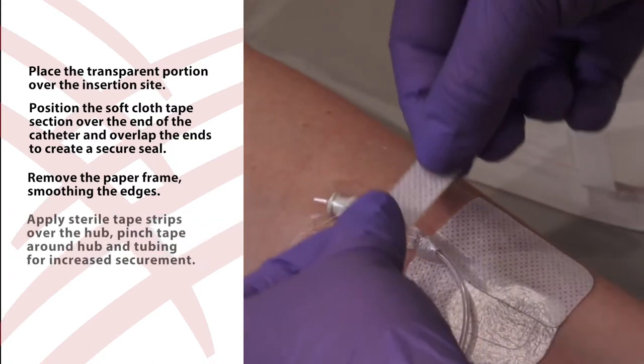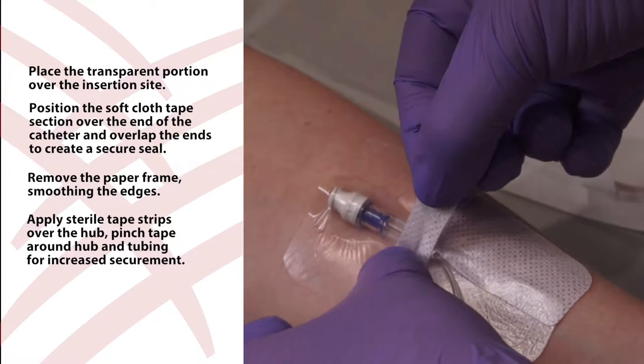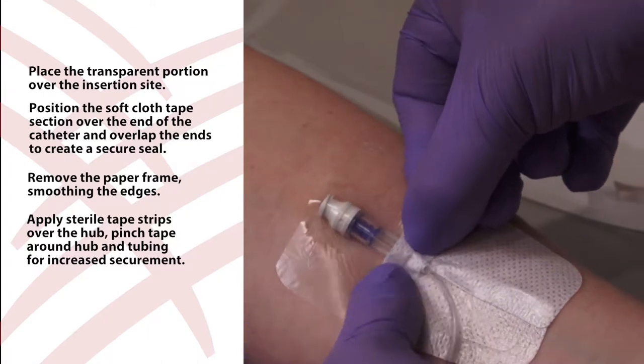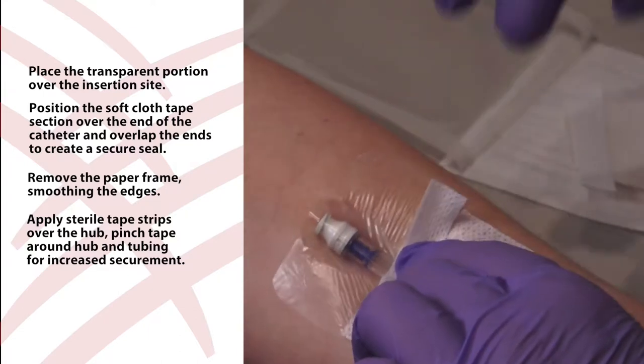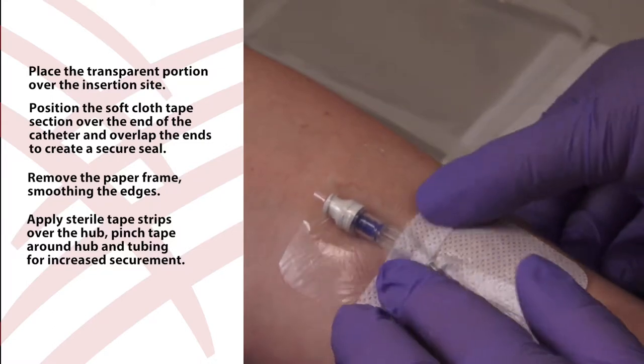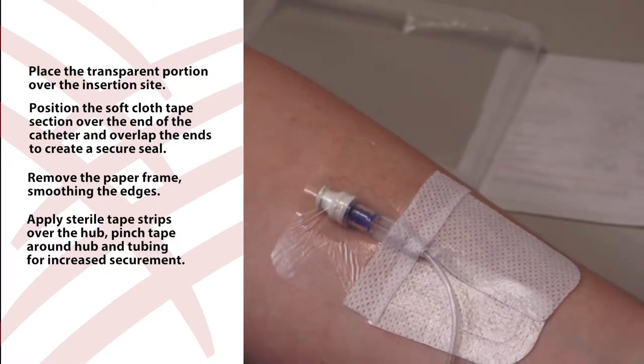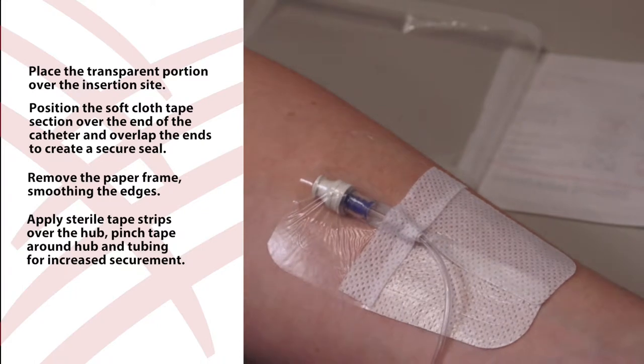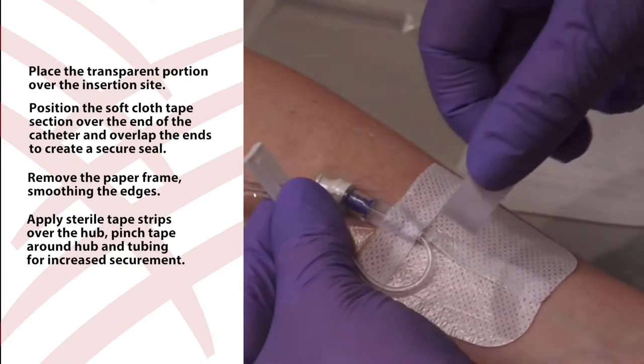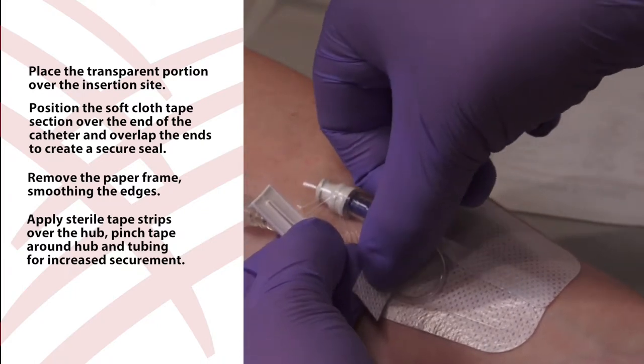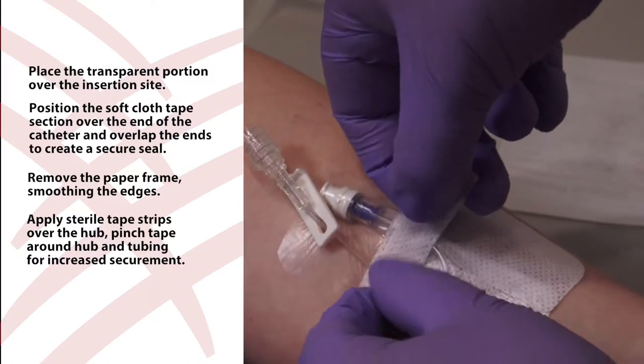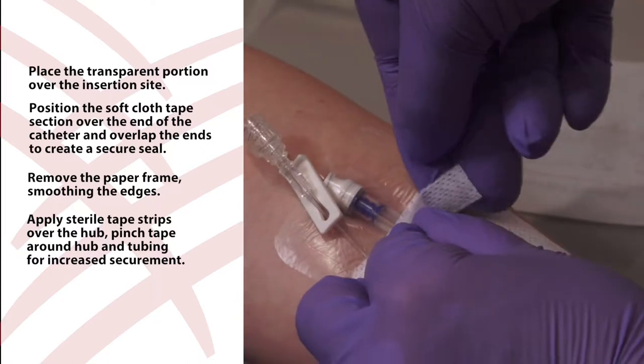Apply the sterile tape strips parallel and adjacent to each other over the lower hub and continue straight out across the dressing. Some clinicians may prefer to chevron the tape across the lower portion of the hub. Pinch the tape around the lower hub and apply firm, gentle pressure over all surfaces to maximize adhesive.